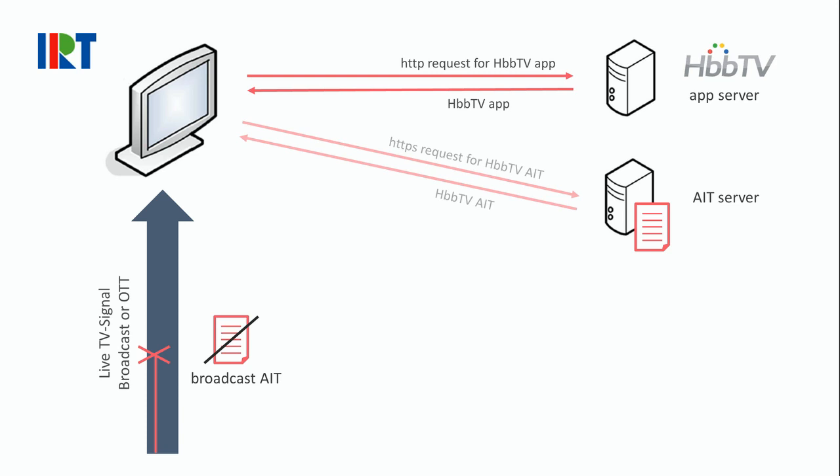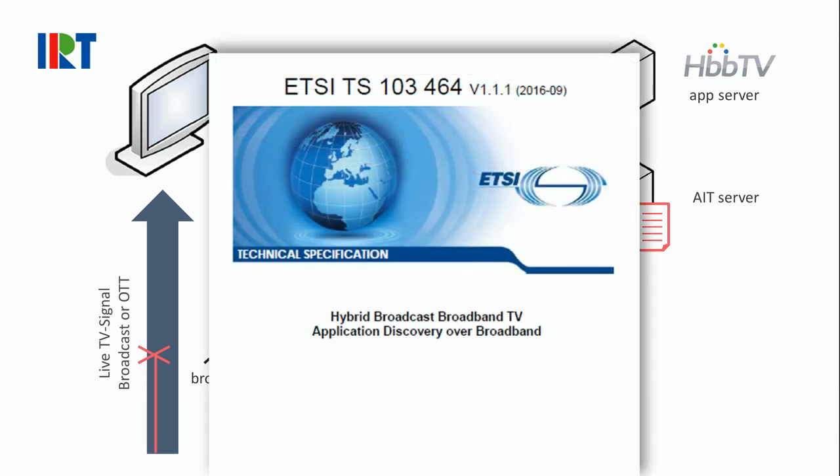How this works in detail and how the AIT server can be found by the receiver is specified in the ETSI standard TS103464, Hybrid Broadcast Broadband TV Application Discovery Over Broadband, which has been created by the HbbTV association.